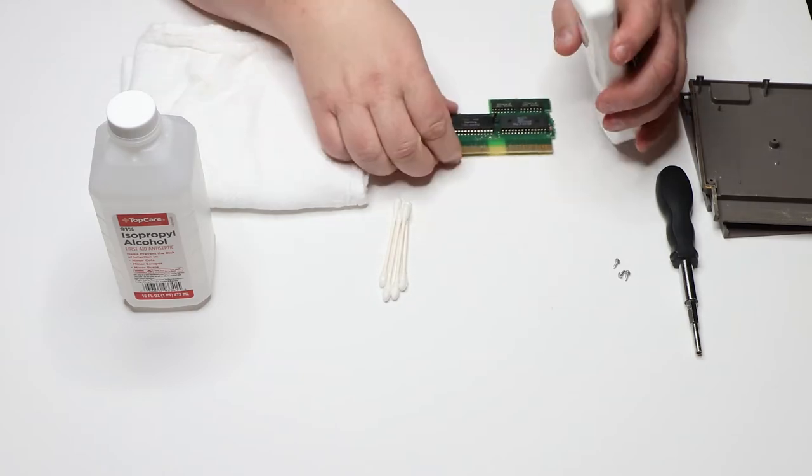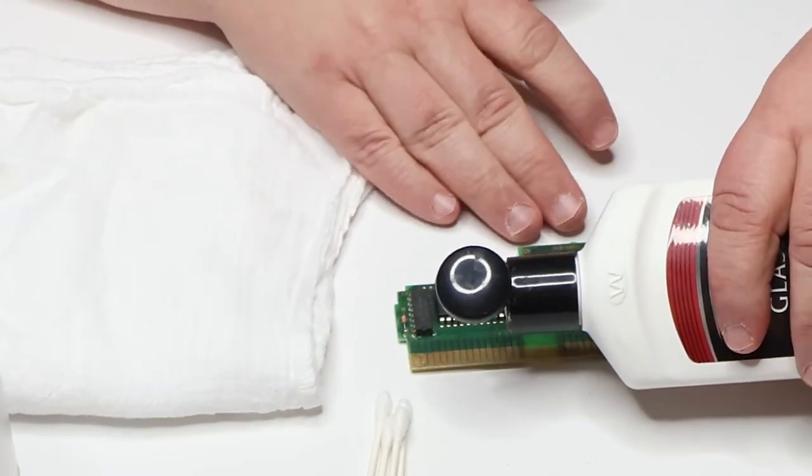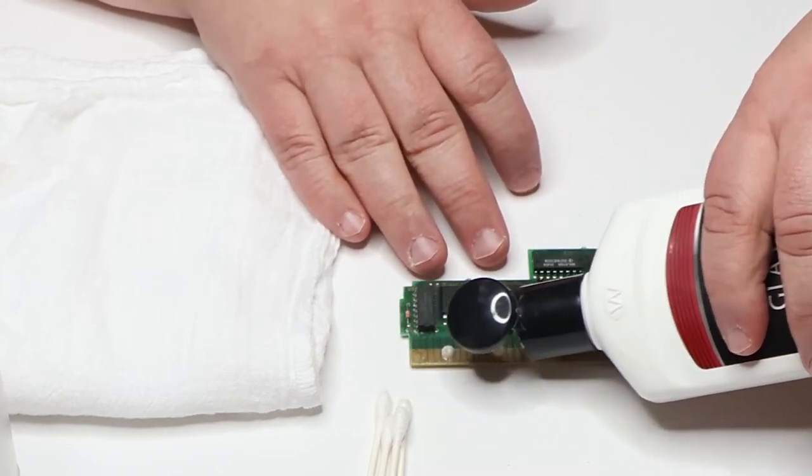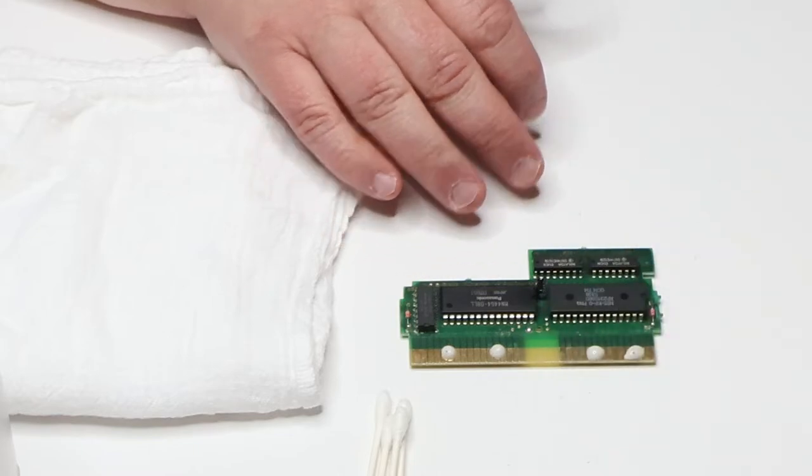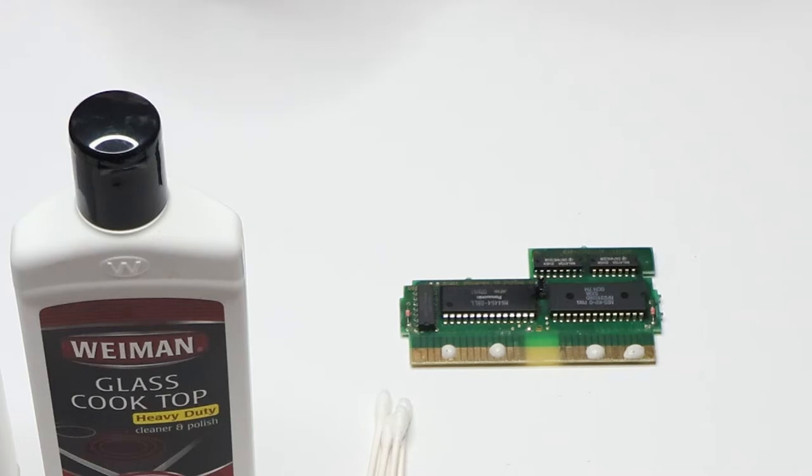Some people say just use water. That doesn't do the job at all. In some cases, depending on what water you're using, you might corrode the circuit board further. Now, having said that, here we go. We're going to do a little dab of the Wyman's onto the cartridge. Don't overdo it. Again, less is more here.